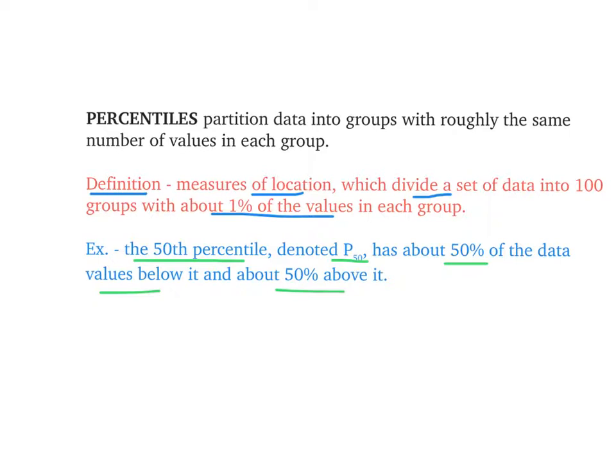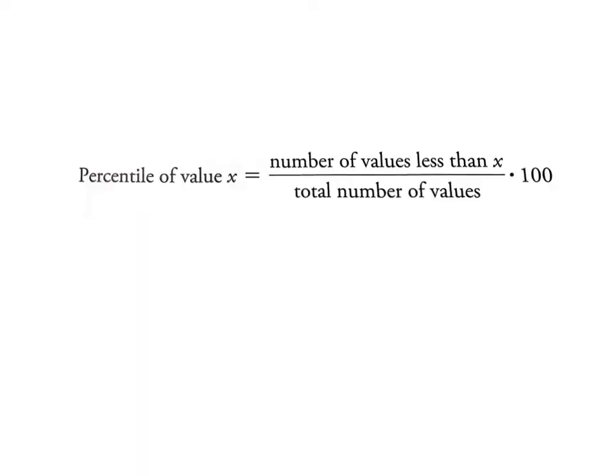Funny story here. My son one time when he was a very small child went to the doctor. His head is really big and the doctor said his head is in the 100th percentile. Statistically that means that's the biggest head in the world for his age, bigger than 100% of all the other heads in the world, which is awesome. The percentile of value x is the number of values less than the value divided by the total number, then multiply by 100. Let me show you an example here.